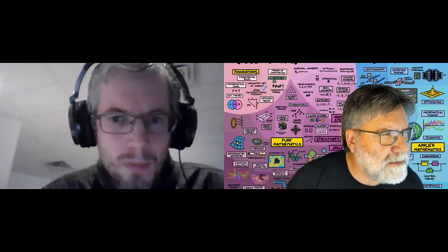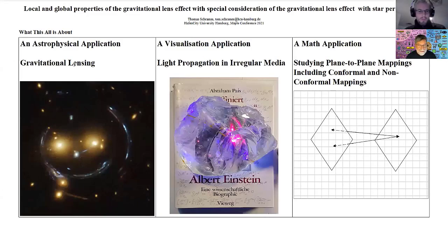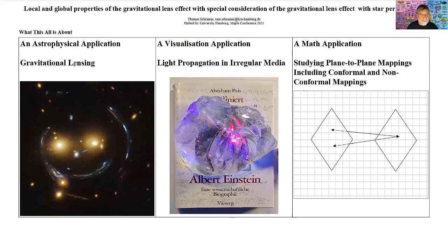Can you see my Maple screen? Yes, we see it. So, the medium is the message — I use the Maple feature for presentation with F11. This talk is about a real implementation of my research done 35 years ago, recalculated in Maple. The astrophysical background is the gravitational lens effect: bending of distant light sources such as quasars by foreground masses like stars or galaxies.